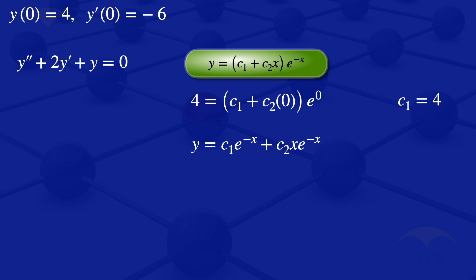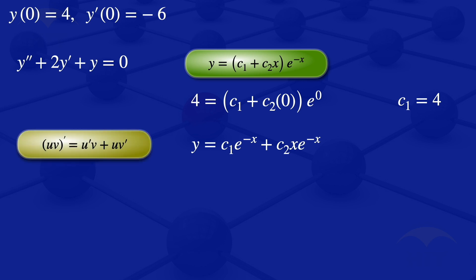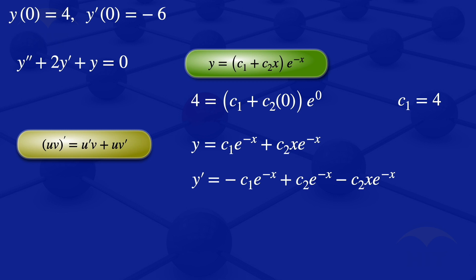The first term differentiates directly. The second term, c2·x·e^(-x), is a product, so we apply the product rule: (uv)' equals u'v plus uv'. Differentiating gives y prime equals minus c1·e^(-x) plus c2·e^(-x) minus c2·x·e^(-x).